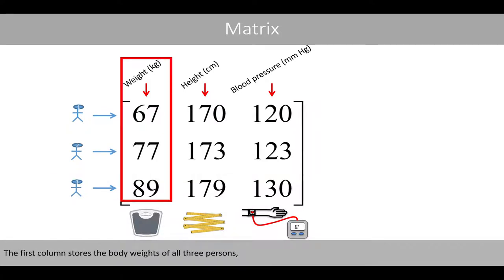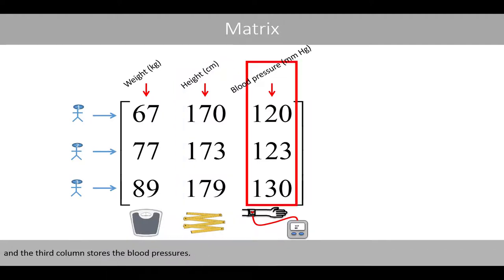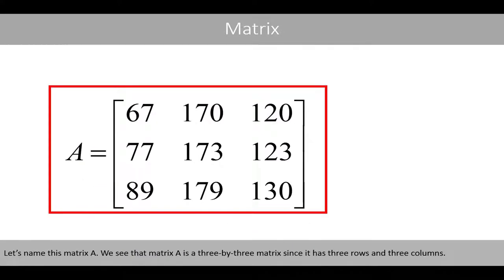The first column stores the body weights of all three persons, whereas the second column stores the body heights, and the third column stores the blood pressures. Let's name this matrix A. We see that matrix A is a three by three matrix since it has three rows and three columns.